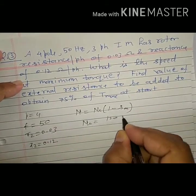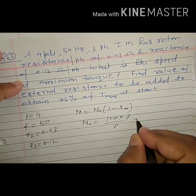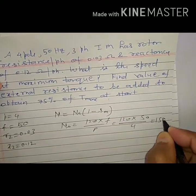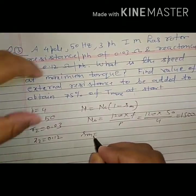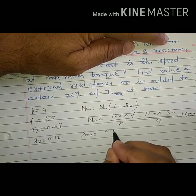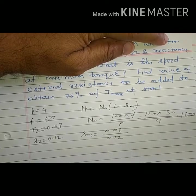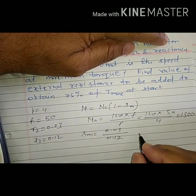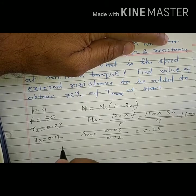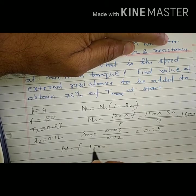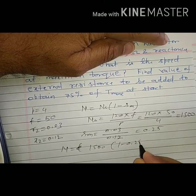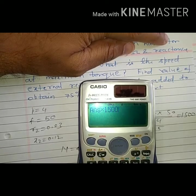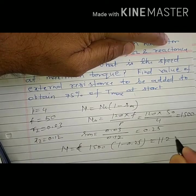NS is 120F by P, 120 times 50 by 4, it comes as 1500. SM is R2 by X2, so R2 0.03 by 0.12, it comes as 0.25. Therefore N will be 1500 times 1 minus 0.25, that is 1125 RPM.